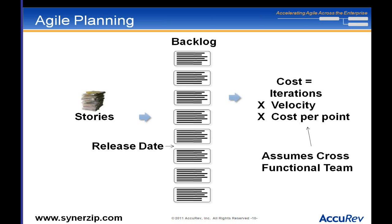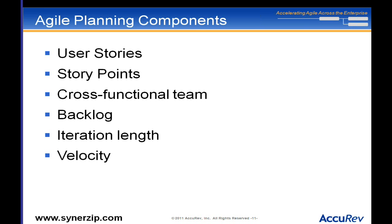This assumes something called a cross-functional team. I've introduced a lot of terms — user stories, story points, cross-functional team, backlog, iteration length, velocity — and I haven't defined them yet. I wanted to show you the overarching framework first, and we'll revisit it. Now let me define those terms, and then we'll circle back.